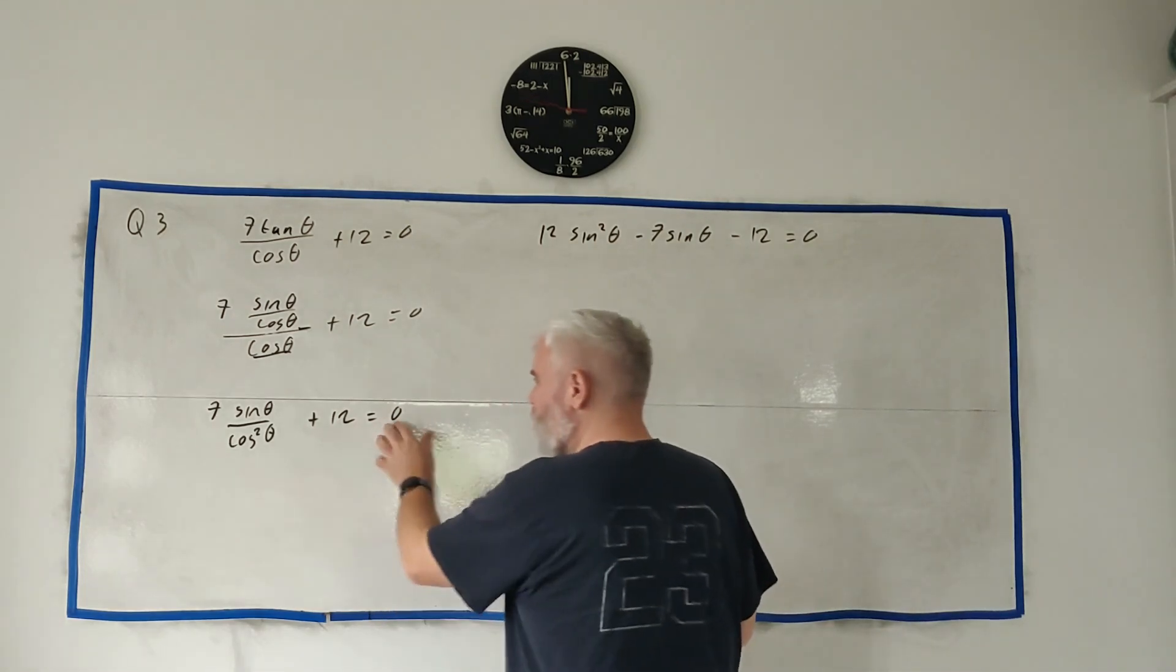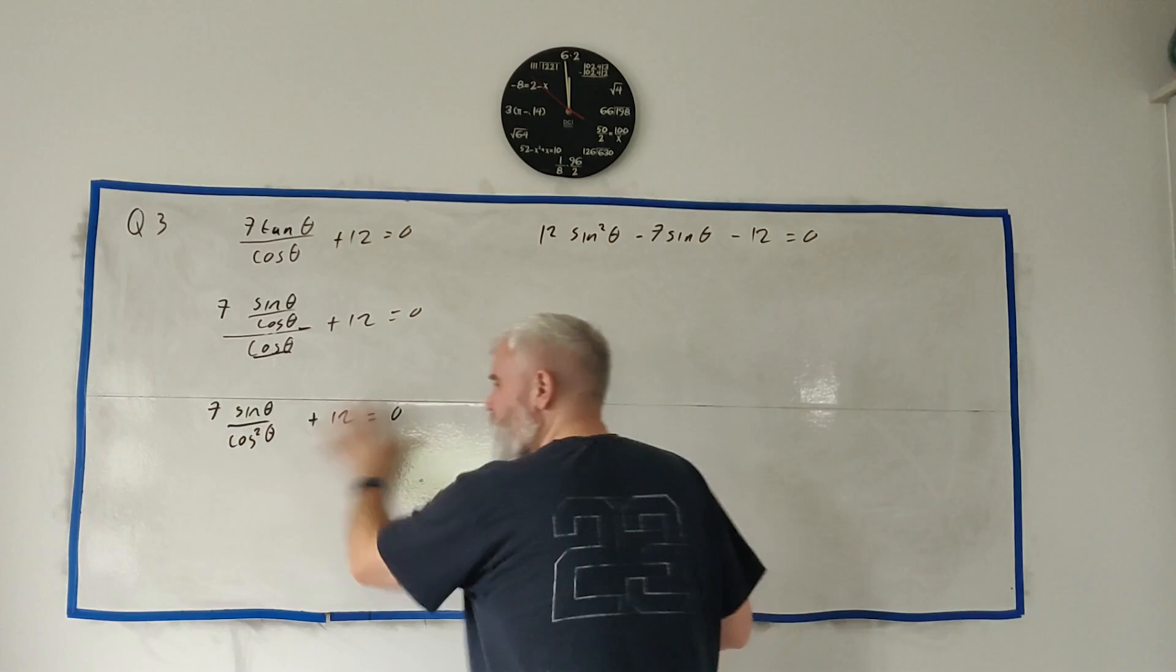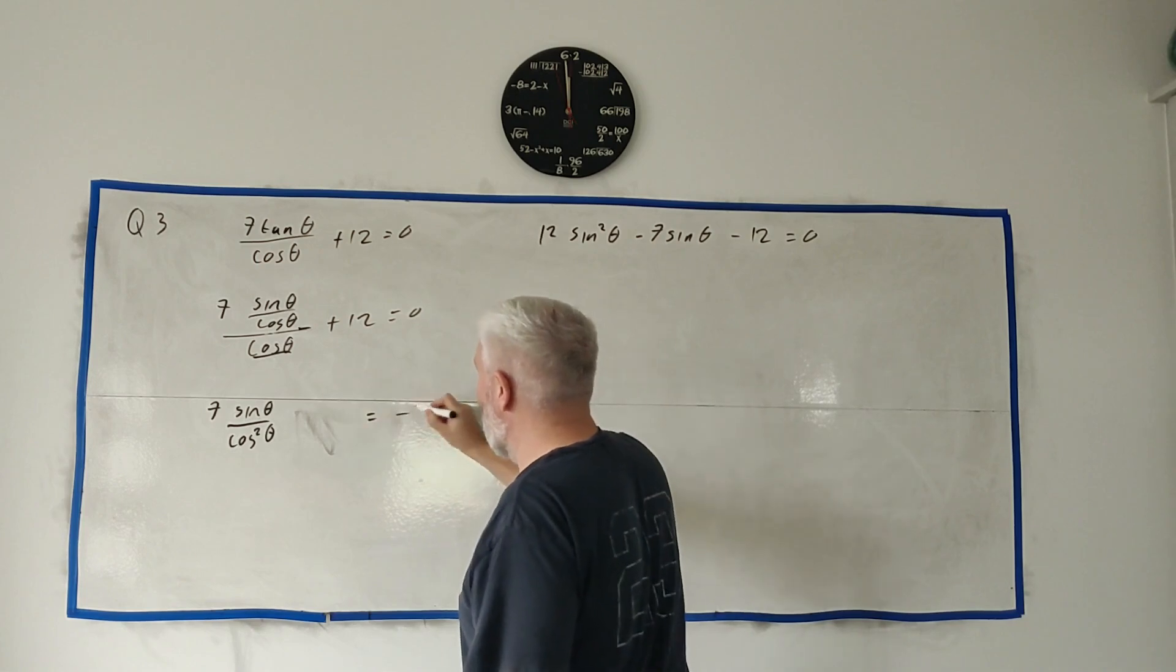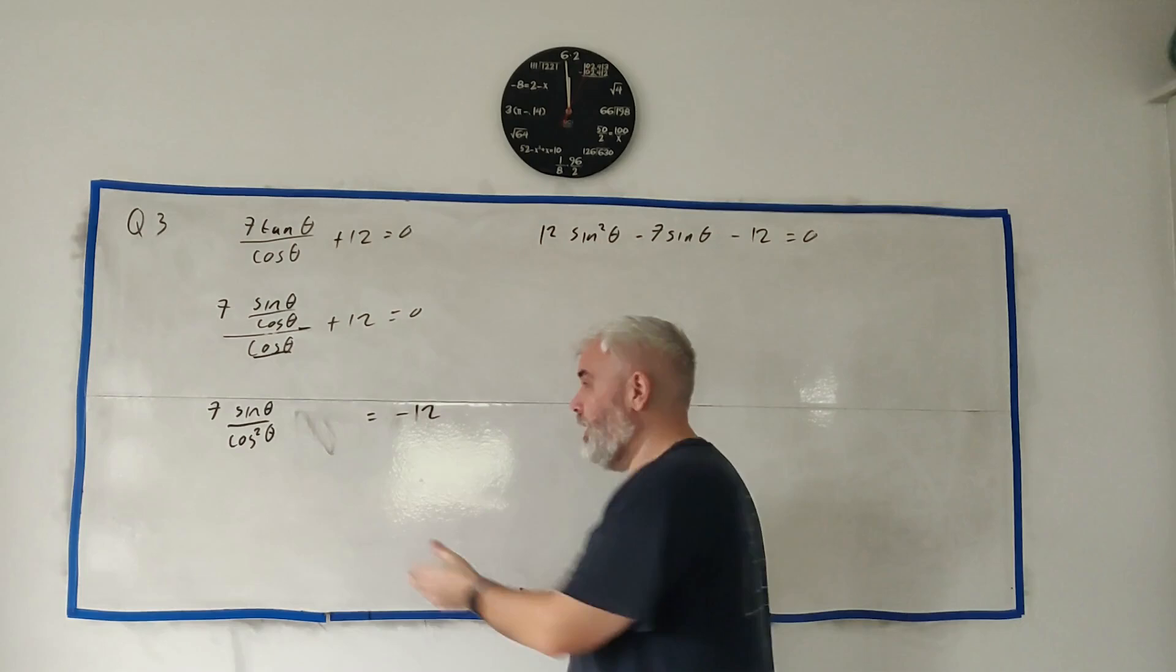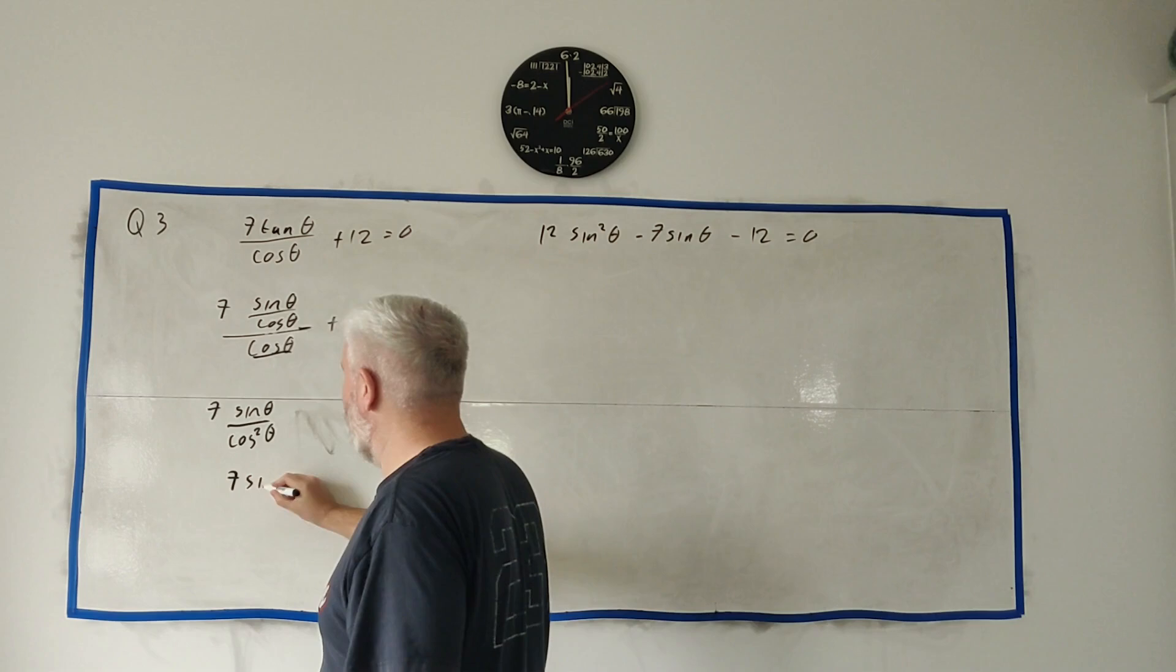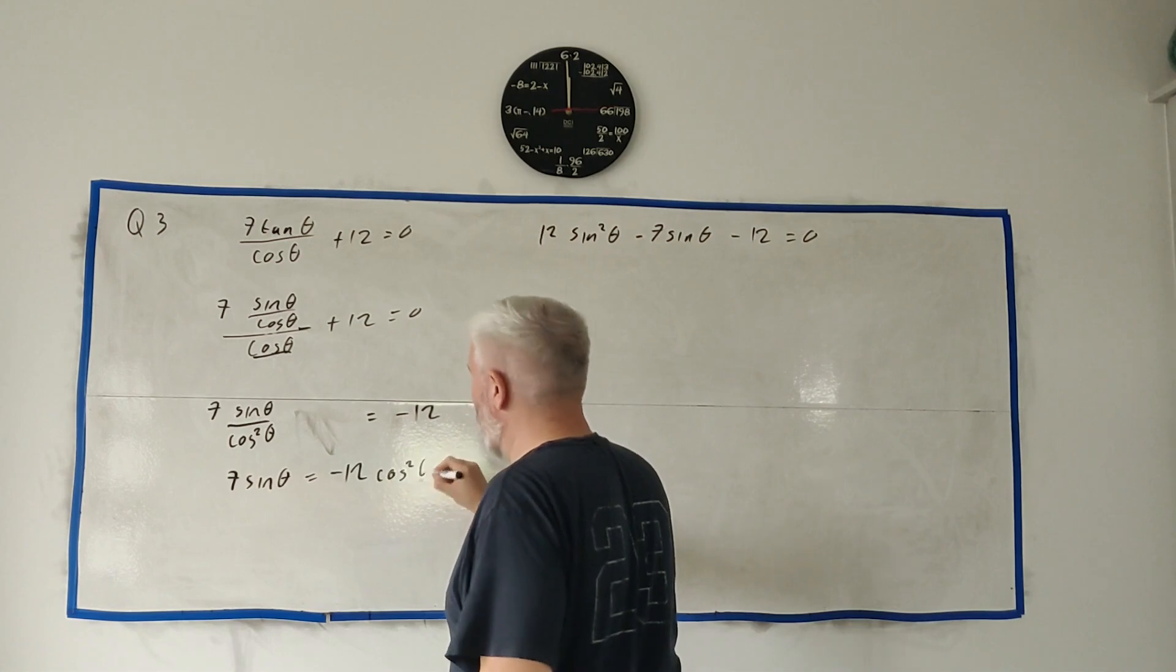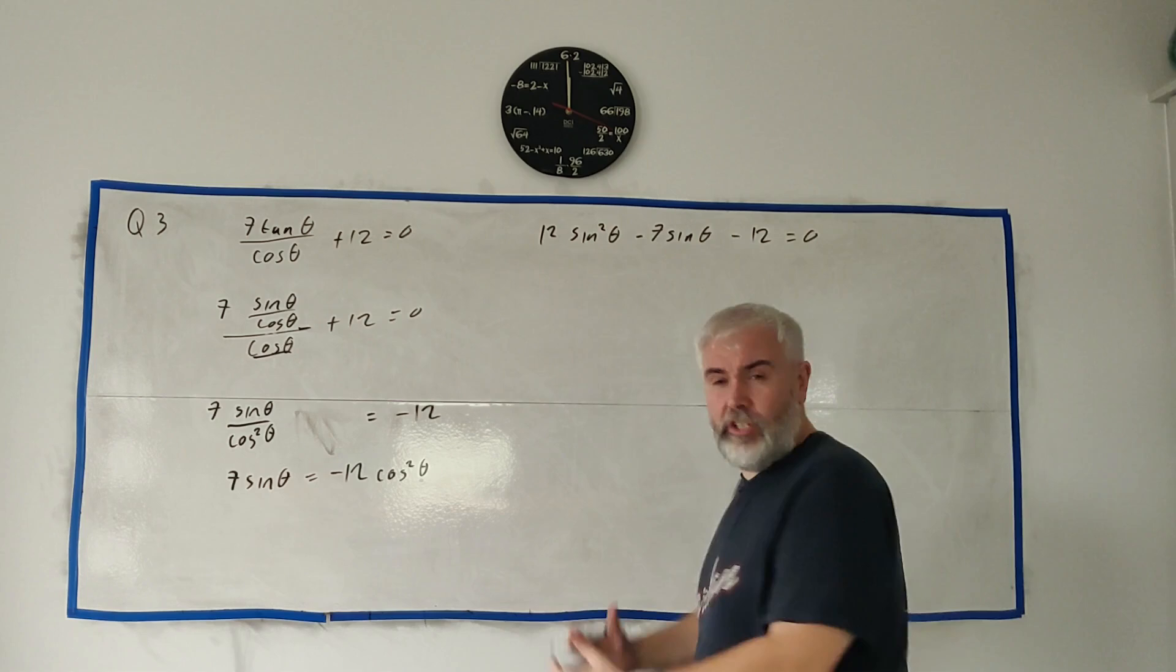Plus 12 equals 0. I would start moving things around because we have a 0. 0s are very helpful. It looks like we have three terms. We actually only have two. If we move this plus 12, it'll quickly turn into a minus 12. And we can start multiplying across now. We can get rid of this bottom row. 7 sine theta is equal to minus 12 multiplied by cosine squared theta.